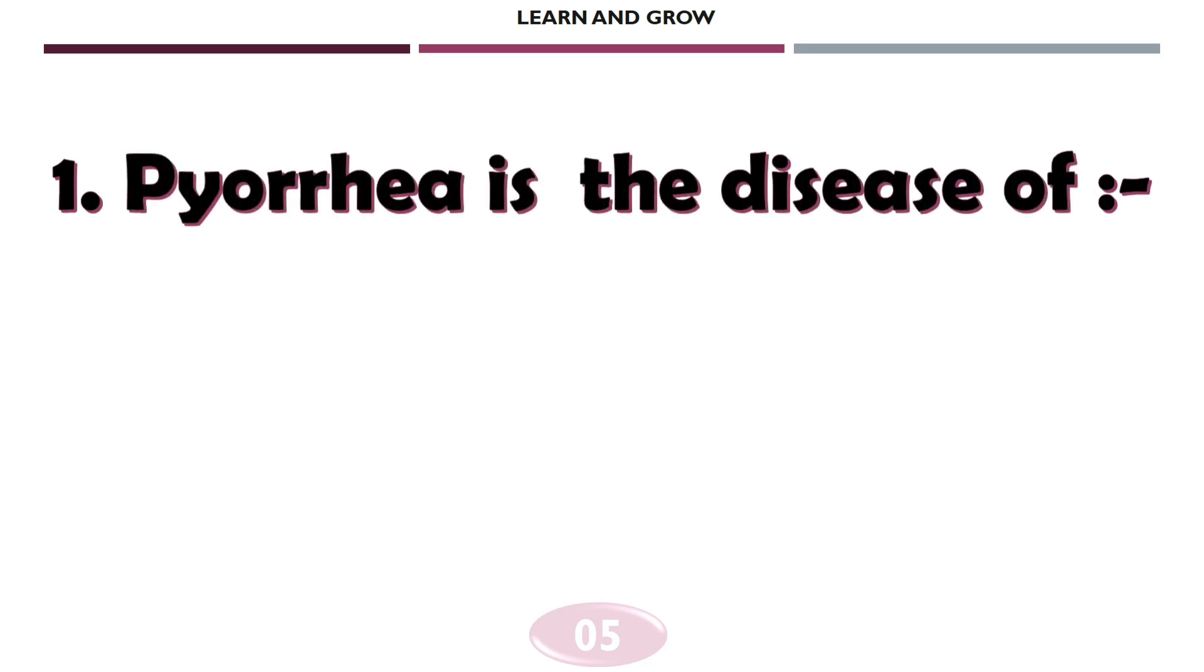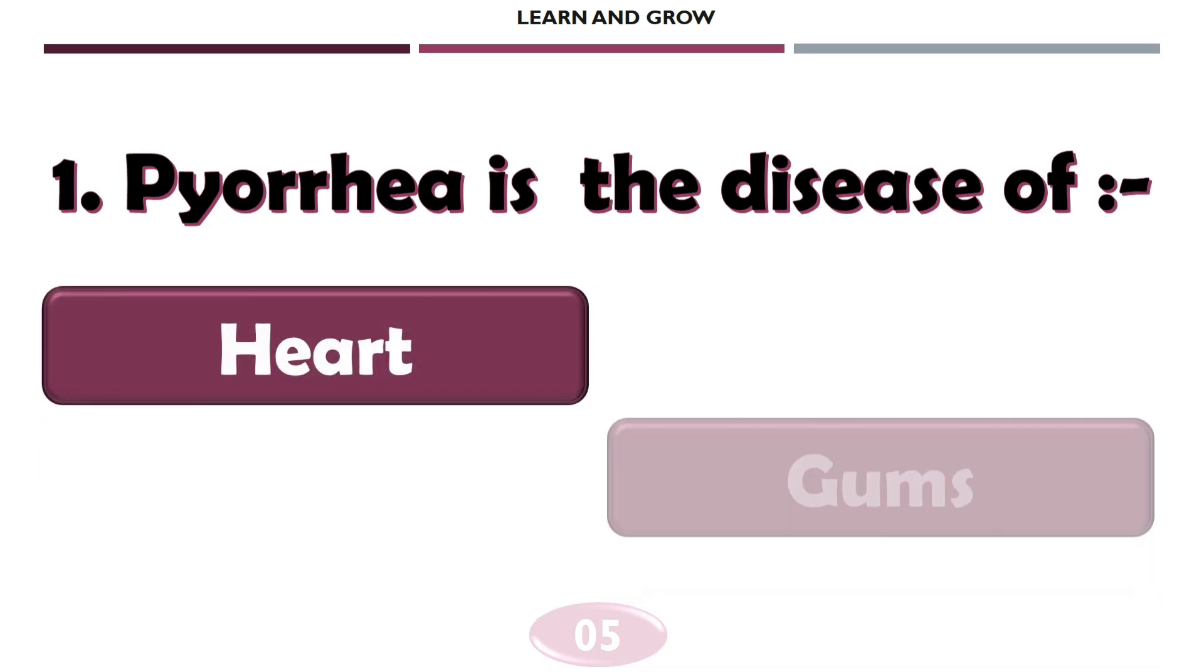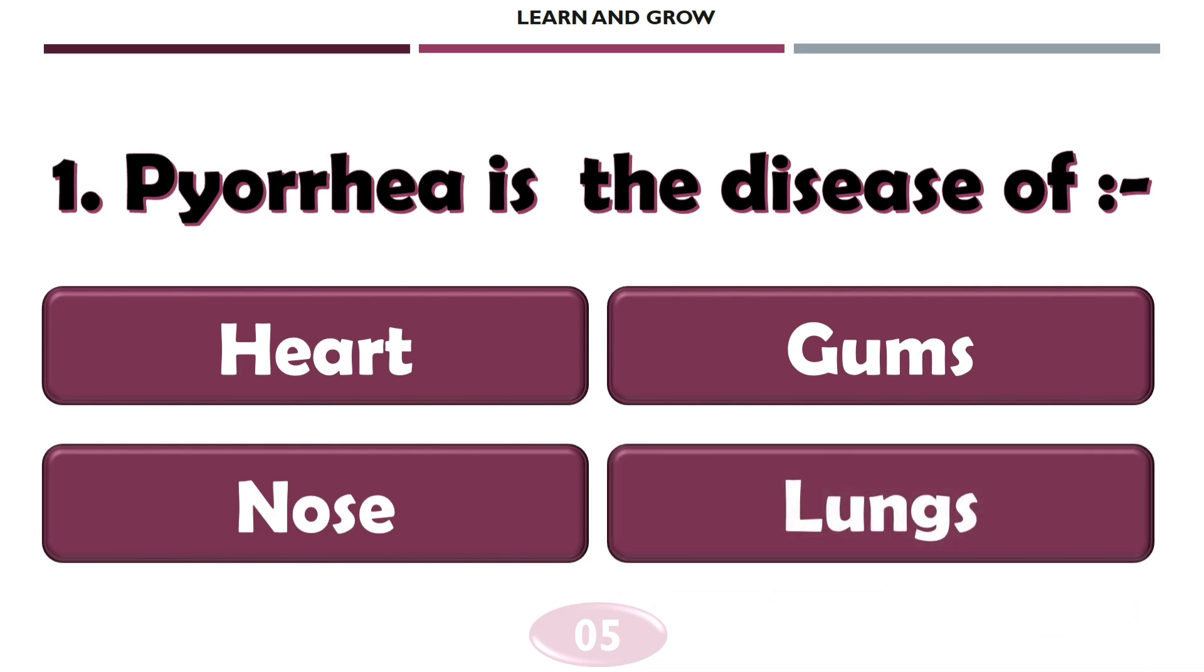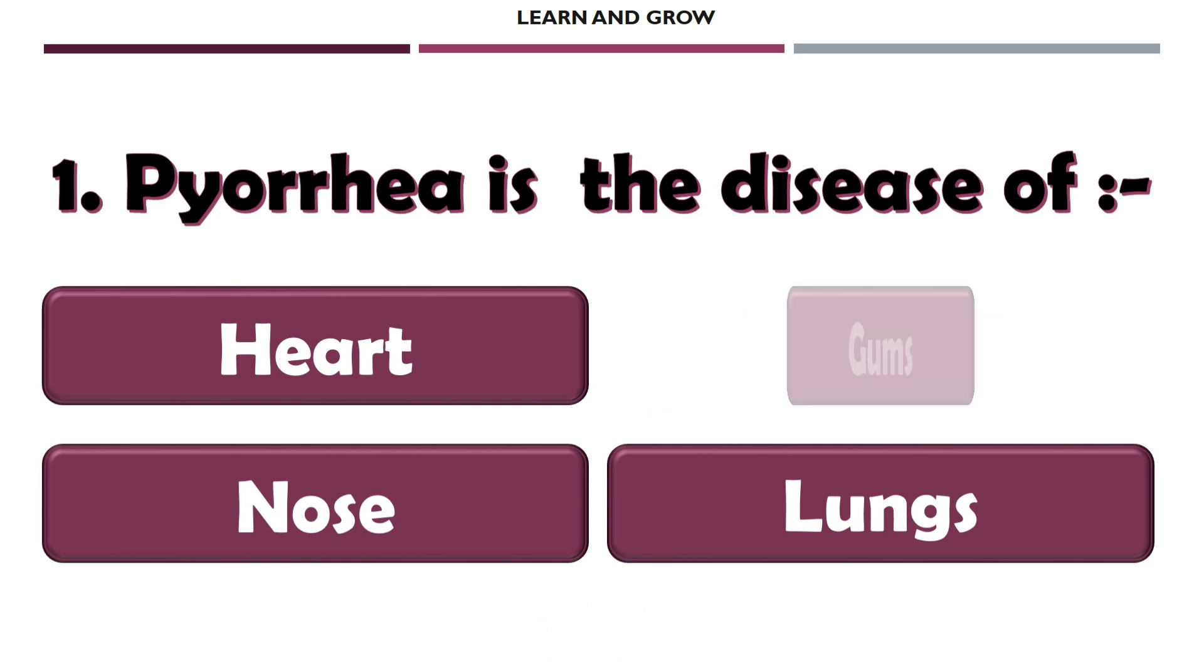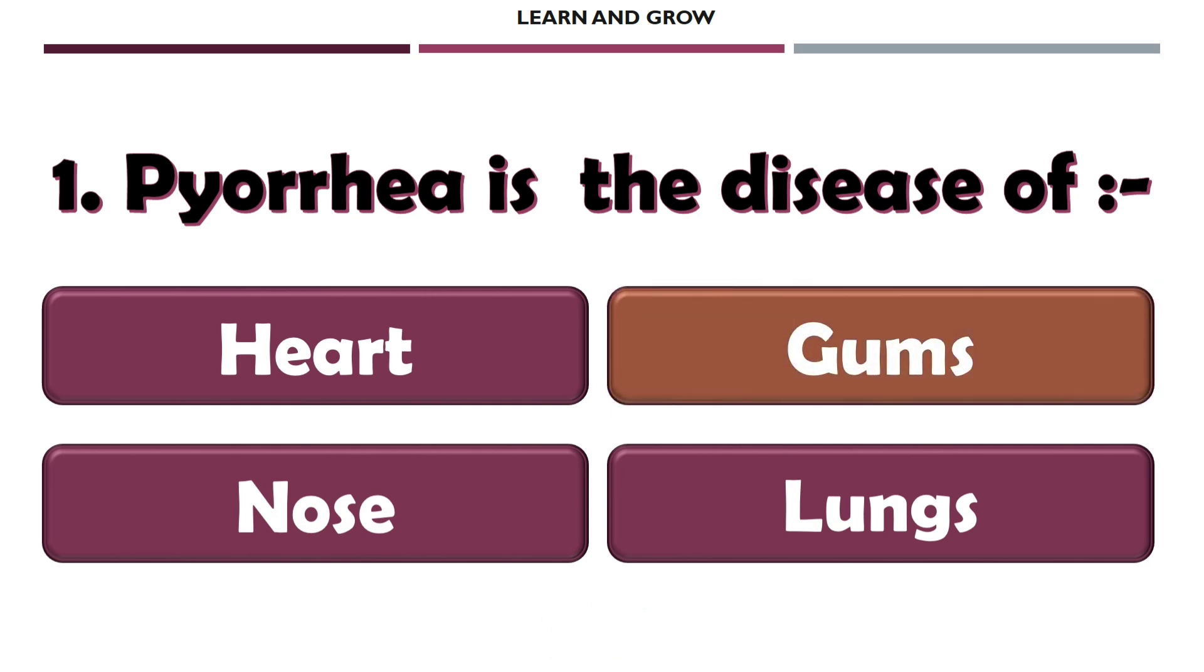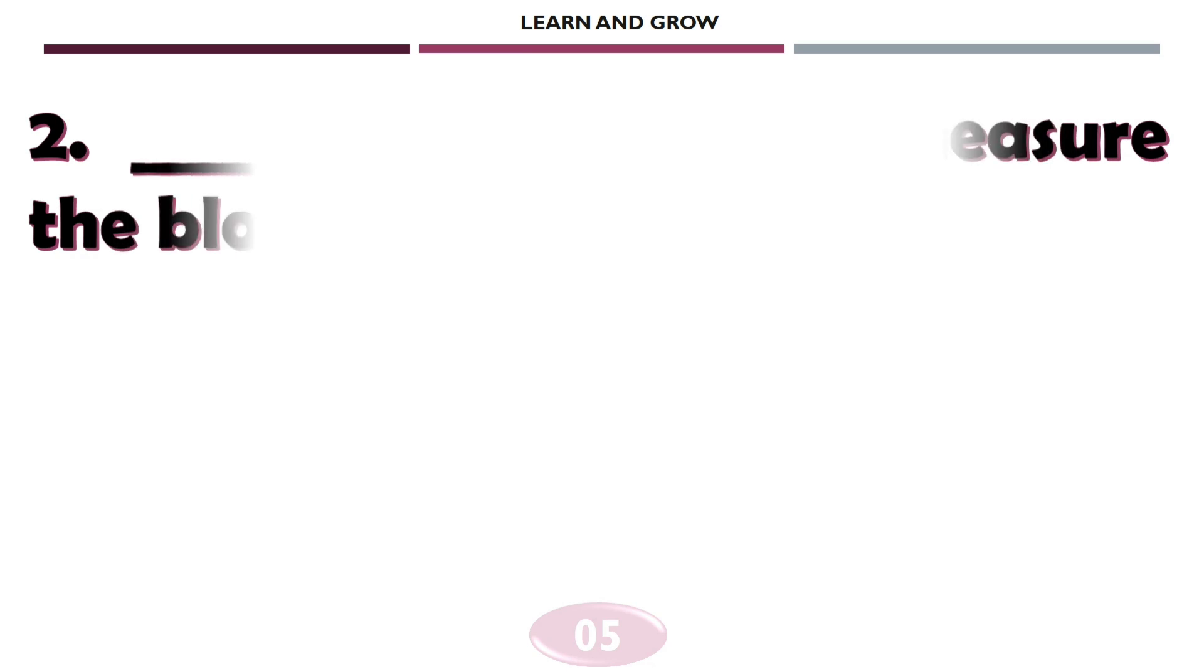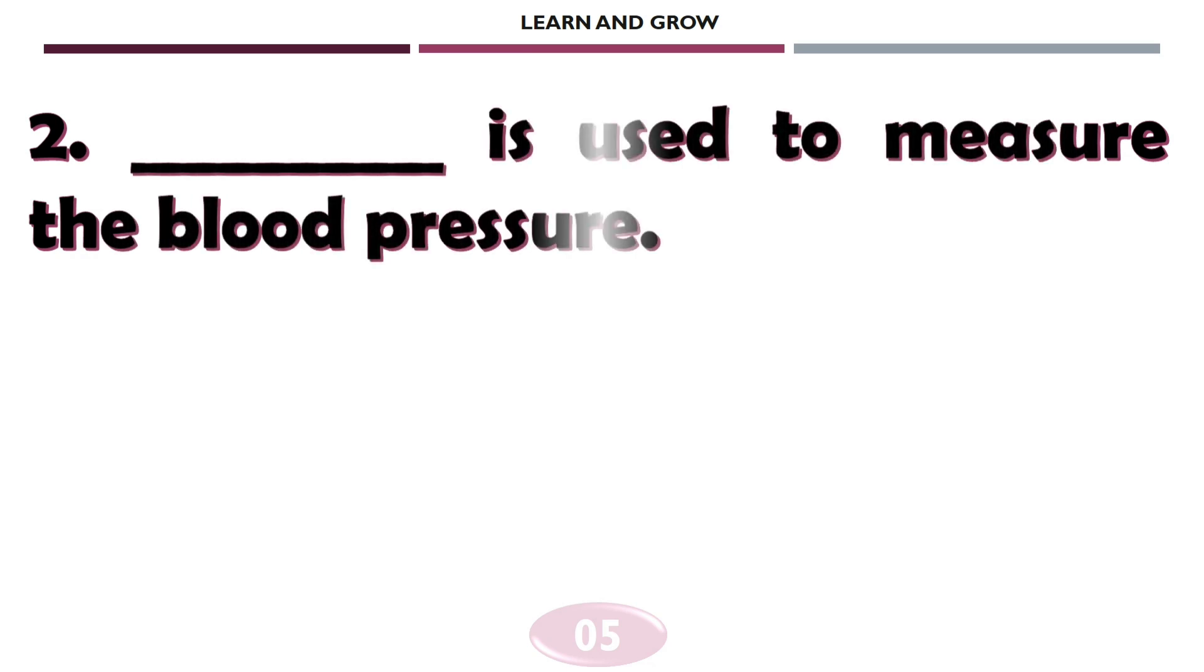Pyorrhea is the disease of... The correct answer is option B: Gums. Gap is used to measure the blood pressure.